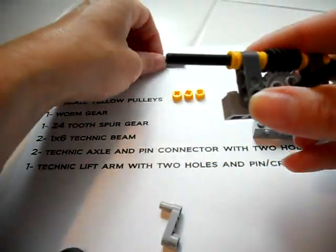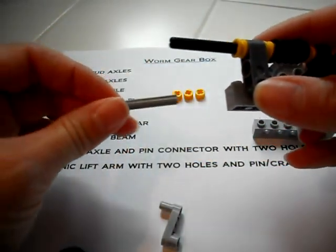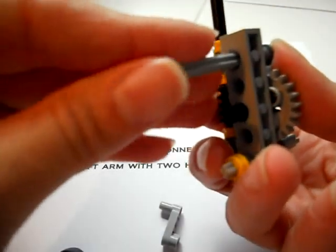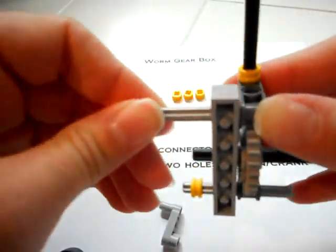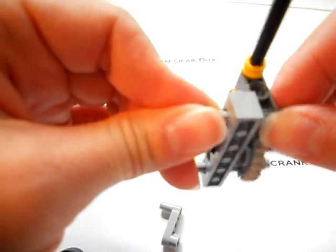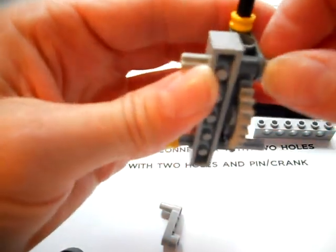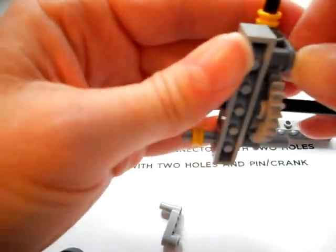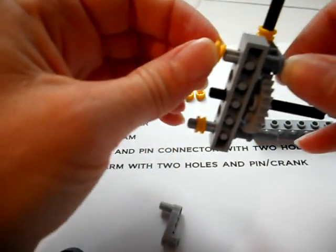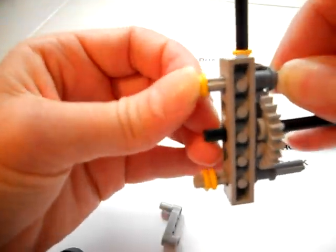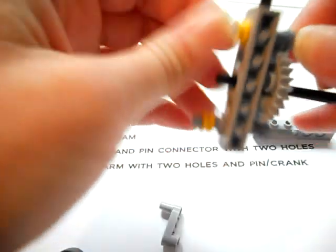Now what I'm going to do is take my remaining No. 5 stud axle. I'm going to slide it in the farthest hole. It needs to line up with the connector on the other side. I'm going to take a yellow pulley, and we are going to cap it.